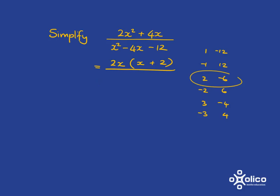So I have at the bottom, I'll have x plus 2 and x minus 6. And now I've got everything multiplied together, so that can cancel with that. And I'll be left with 2x over x minus 6.